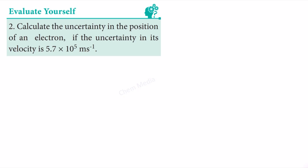Calculate the uncertainty in the position of an electron if the uncertainty in its velocity is 5.7 times 10 to the power 5 meter per second. Here delta v is given as 5.7 times 10 to the power 5 meter per second.